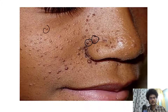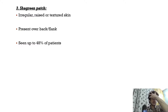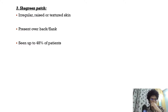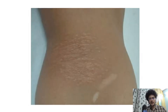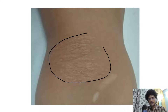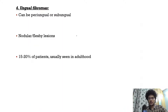This is the classical adenoma sebaceum — it has both vascular and connective tissue elements. Next is the shagreen patch, which is less common, seen in only 48% of patients. It is characteristically present over the back or flank and is characterized by irregular, raised or textured skin.